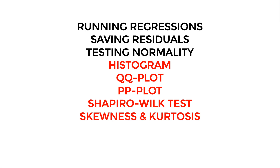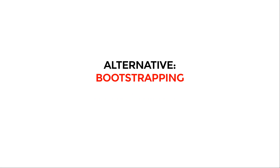There are many different ways to test normality. You can look at a histogram, a QQ plot, a PP plot, use the Shapiro-Wilk test, or look at skewness and kurtosis. But there's an alternative: instead of checking the normality assumption, you can use a procedure that doesn't need normality — and that's bootstrapping. In Process Model 4, the indirect effect is always bootstrapped, but if you want robust results without checking normality for the A path, B path, and direct effect C prime, you can request bootstrapping for all model coefficients. Then you don't need to check normality.